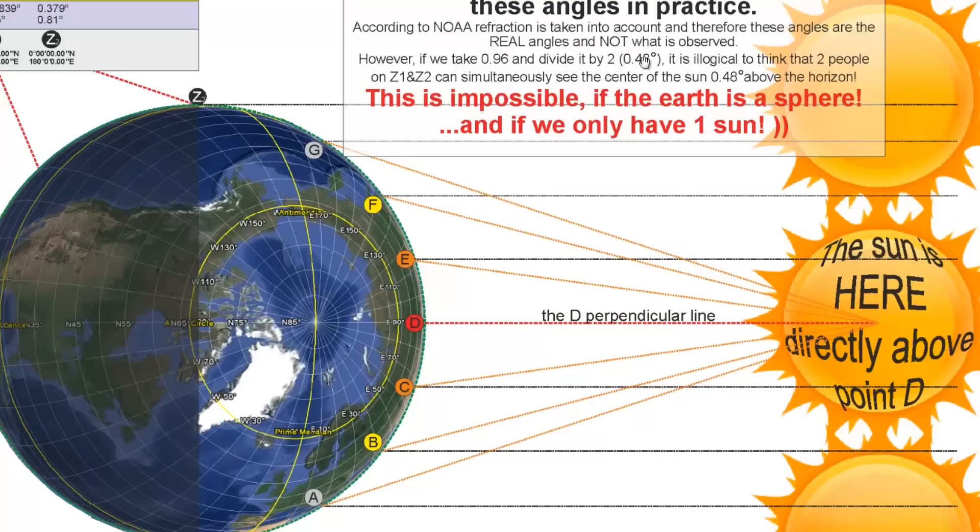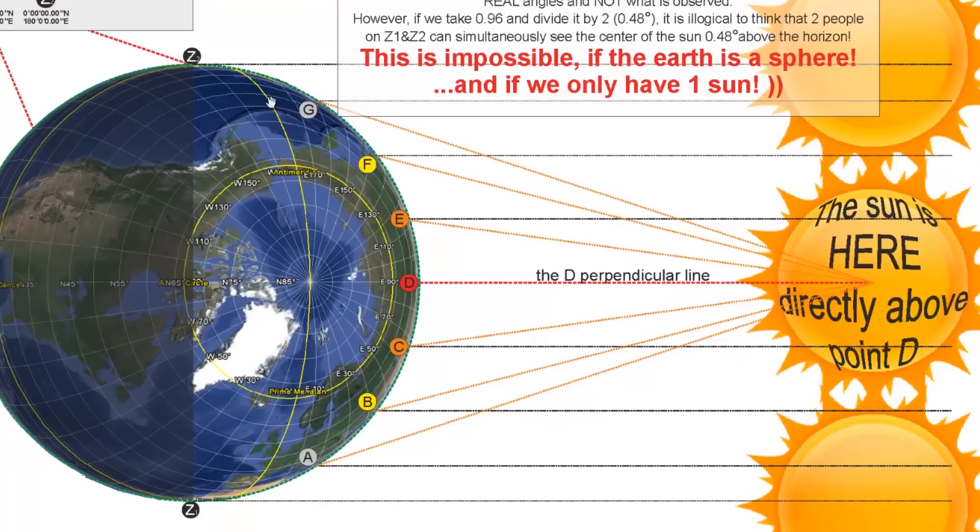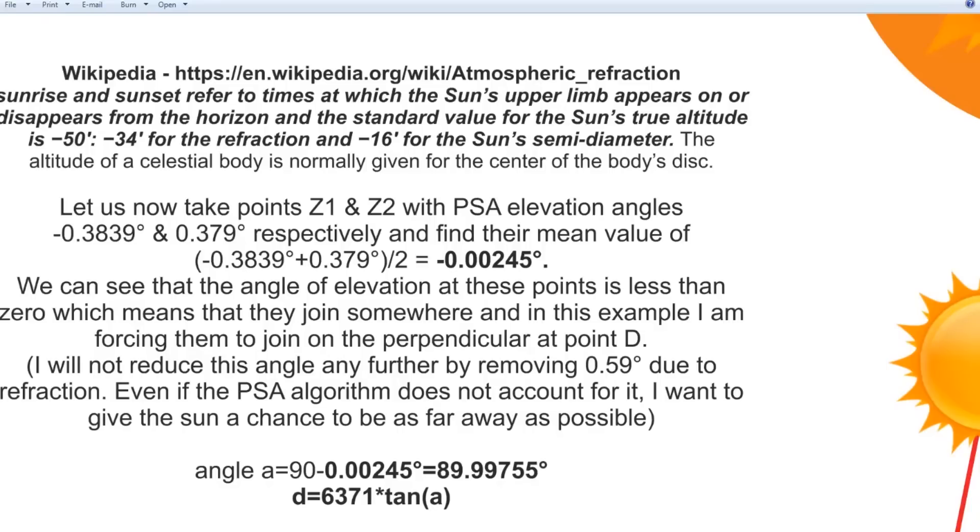It is illogical to think that two people on Z1 and Z2 can simultaneously see the center of the Sun at 0.48 degrees above the horizon. This is impossible if the Earth is a sphere, and if we only have one Sun. Wikipedia on atmospheric refraction. Sunrise and sunset refer to times at which the Sun's upper limb appears on or disappears from the horizon, and the standard value for the Sun's true altitude is negative 50 arc minutes. The altitude of a celestial body is normally given for the center of the body's disk.